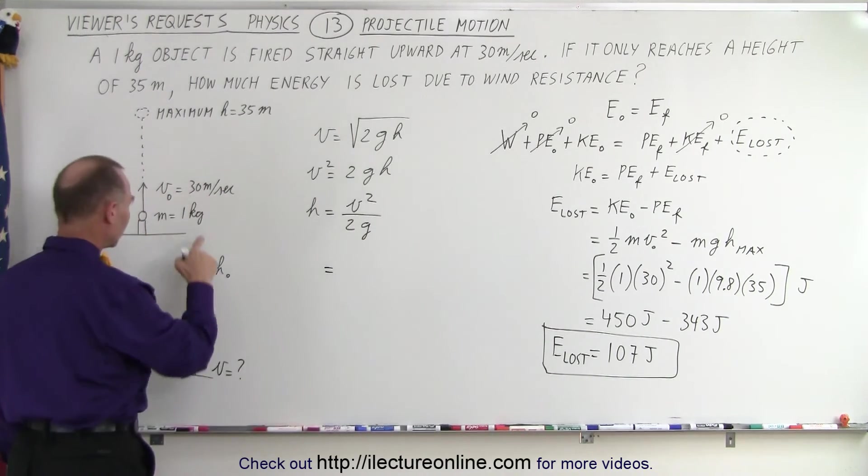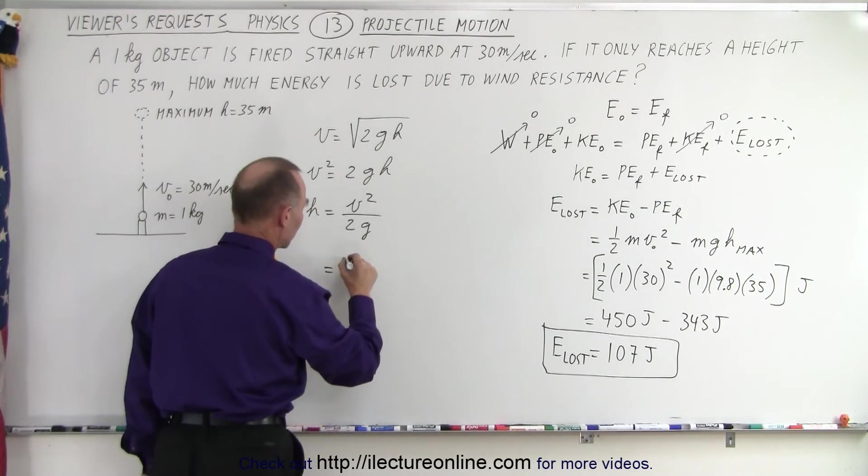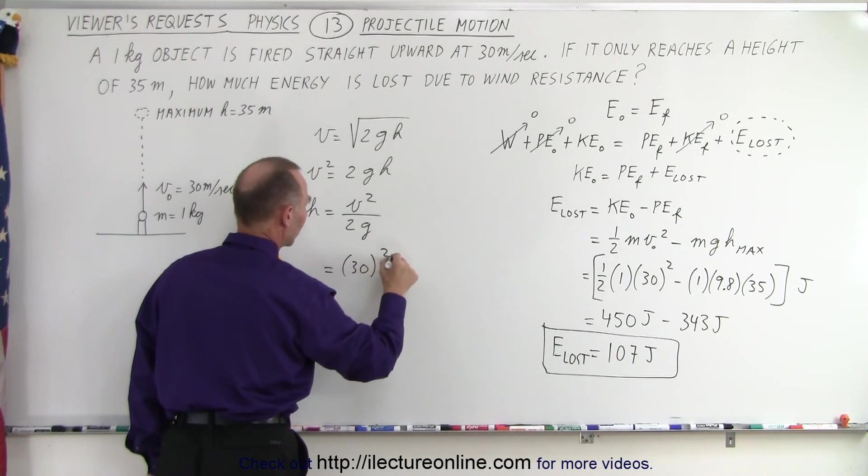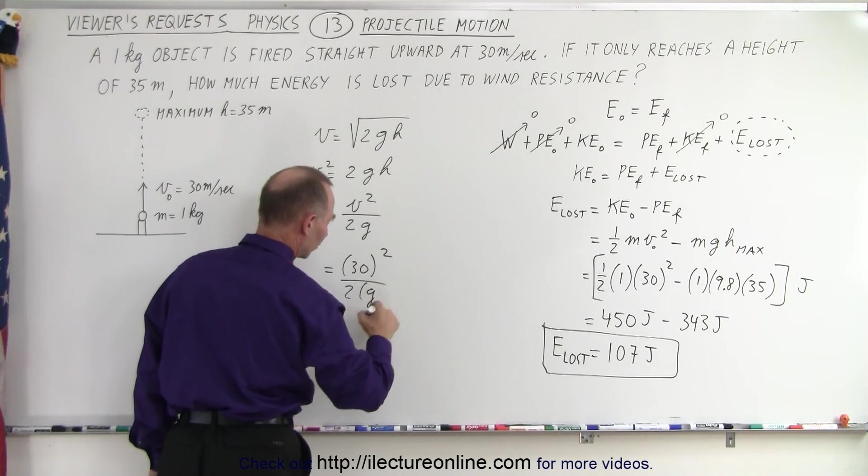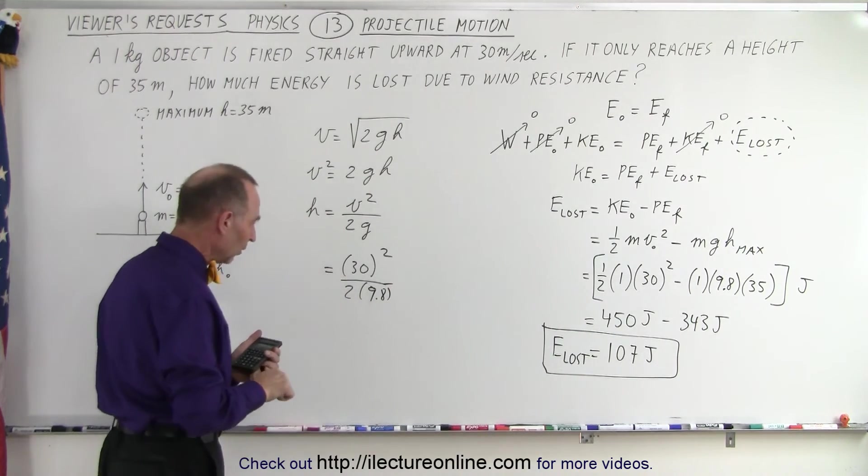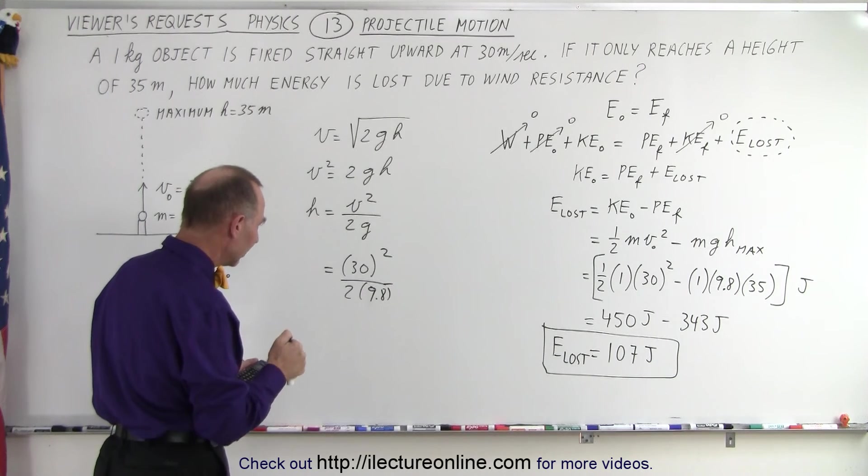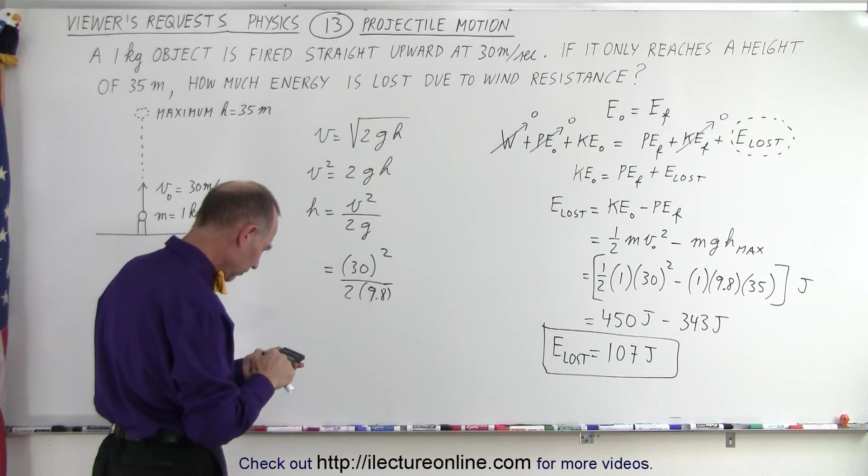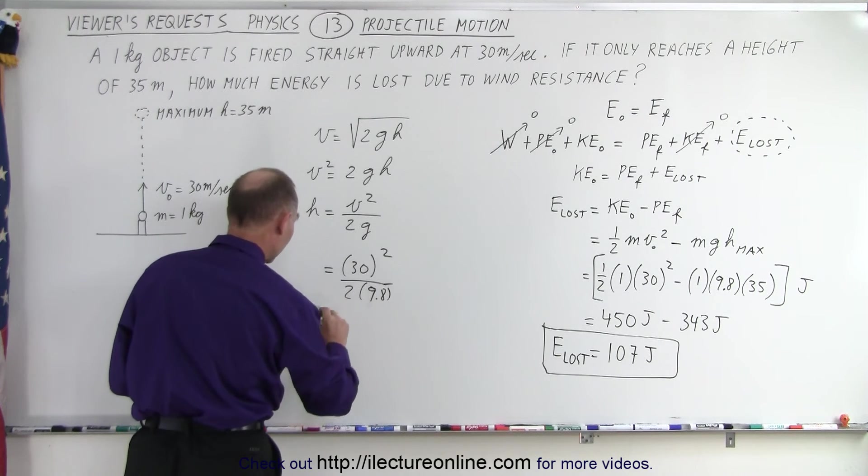The velocity squared, well, we have initial velocity of 30. We have to square that divided by 2 times G, and G, of course, is 9.8. Let's just put in 9.8 there. 9.8. So, we get 900 divided by 2, which is 450. 450 divided by 9.8, which is 45.9 meters.